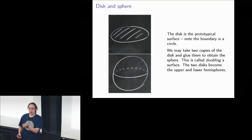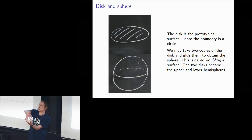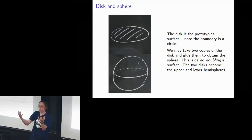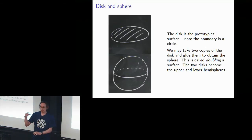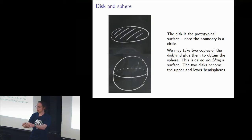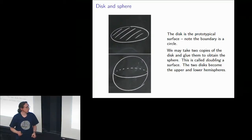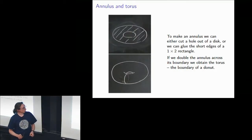If we get rid of the boundary — if we take two disks and glue them together along their boundary — then we get a sphere. The first disk becomes the northern hemisphere and the second disk becomes the southern hemisphere. This process of taking two copies of something and gluing them together along the common boundary is called doubling, and that will be very important for this talk.